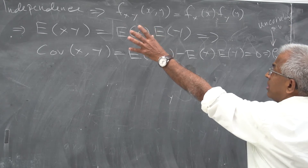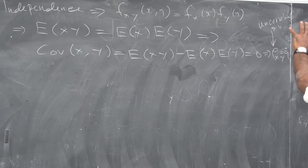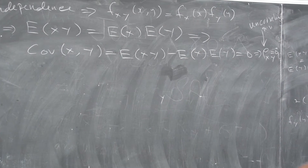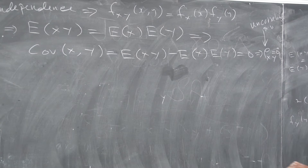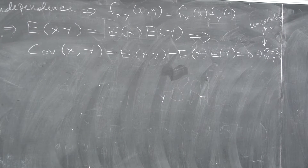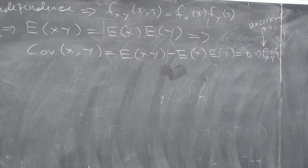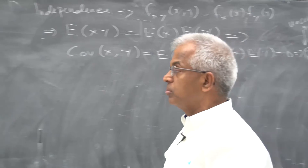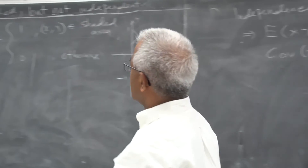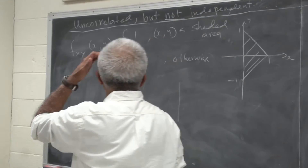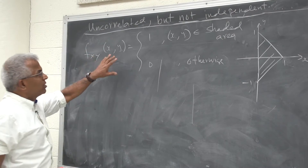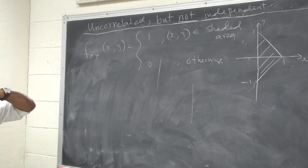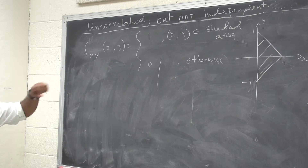So, if two random variables are independent, they are uncorrelated. I'm going to show that the converse is not true. Let's look at this example — I'm going to show that these two random variables are uncorrelated, but they are not independent.